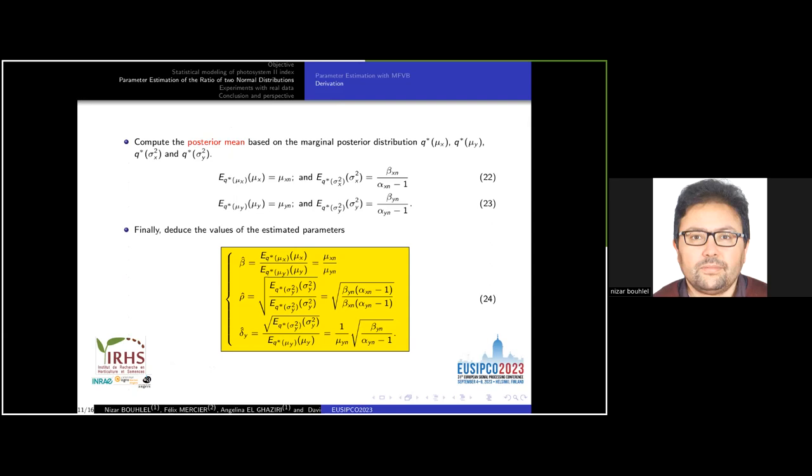We derive the posterior mean based on the marginal posterior distributions q mu X, q mu Y, q sigma X squared, and q sigma Y squared. The mean is the value at which the posterior PDF takes its maximum value. Based on variational Bayes distribution, we compute the posterior mean as described by equations 22 and 23. Finally, we can deduce the values of estimated parameters beta, rho, and delta Y.